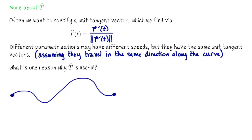Why are we so interested in unit length tangent vectors? Suppose I wanted to understand the shape of a given curve — how can I detect these bends back and forth? Notice that here we're bending pretty sharply, we have pretty sharp curvature, and here we're bending but it's a little bit less. How can I measure that? How can I detect these zones of curvature?